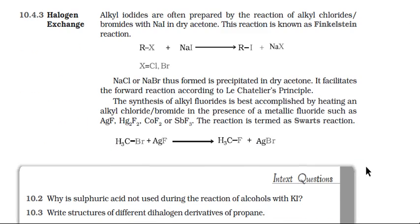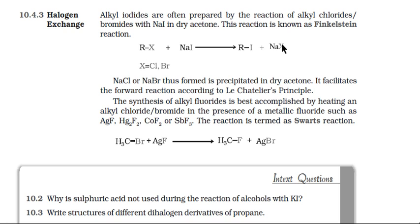Since most reactions discussed deal with preparation of chloro or bromo compounds, there are very few reactions dealing with preparation of iodo or fluoro compounds. There are two such reactions: the Finkelstein reaction for preparation of alkyl iodide, and the Swarts reaction for preparation of alkyl fluoride. These are known as halogen exchange reactions. In the Finkelstein reaction, a chloro or bromo compound is allowed to react with sodium iodide (NaI) in the presence of acetone, and the halogen is exchanged by iodine to give alkyl iodide along with NaCl or NaBr.